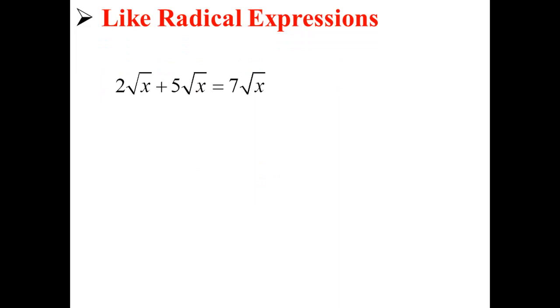Here we have the expression 2√x + 5√x = 7√x. We're able to add these because they have the same radicands, x, and they have the same indice. In this case, we're just taking the radical of each x, so we can do 2√x + 5√x and get 7√x.